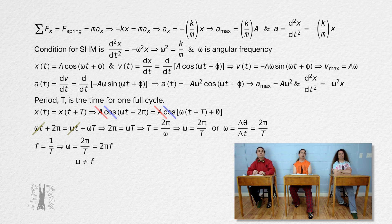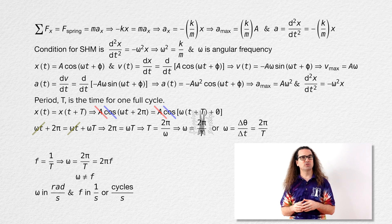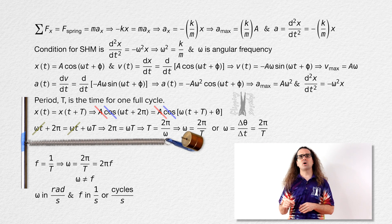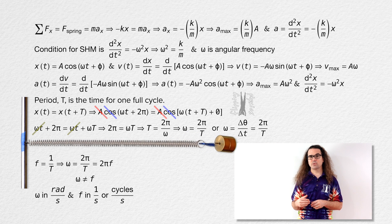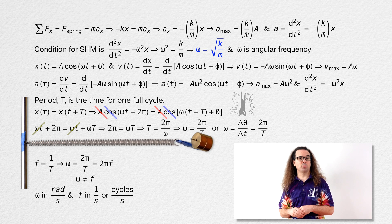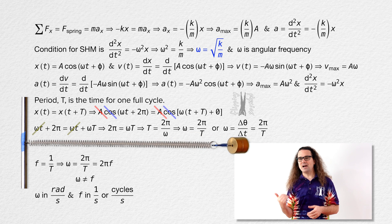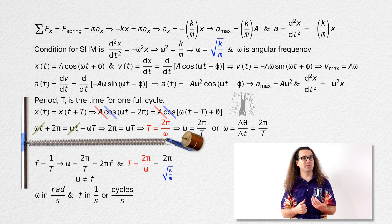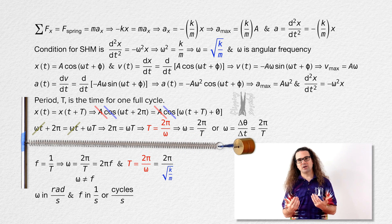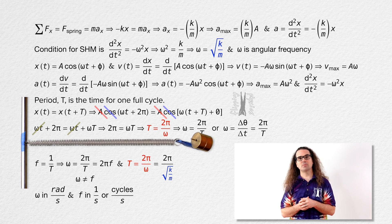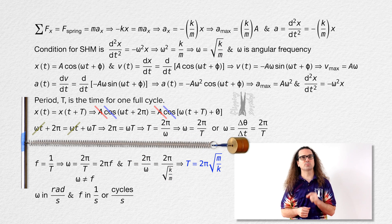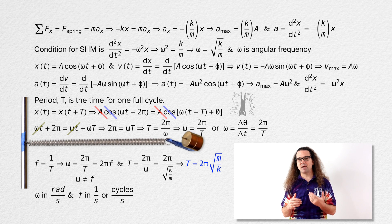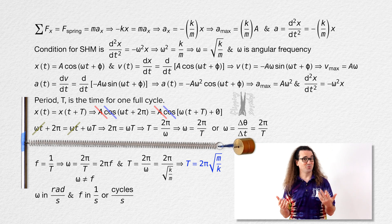The units for angular frequency are radians per second, while the units for frequency are 1 over seconds, or cycles per second — so even their units are different. Now let's return to the mass spring system. We derived that the angular frequency of a mass spring system equals the square root of the spring constant over mass. Substituting that into the equation for the period of simple harmonic motion, the period of a mass spring system equals 2 pi times the square root of mass over spring constant. We have used this equation many times before; now we know how to derive it.